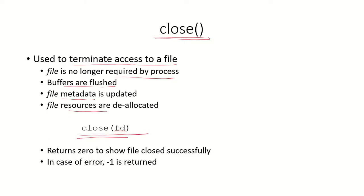The close system call takes the file descriptor of the file as an argument. If this system call runs successfully, a zero value will be returned showing that the file has been closed. If an error occurs, then a return value of minus one will be sent, indicating that the file has not closed successfully.